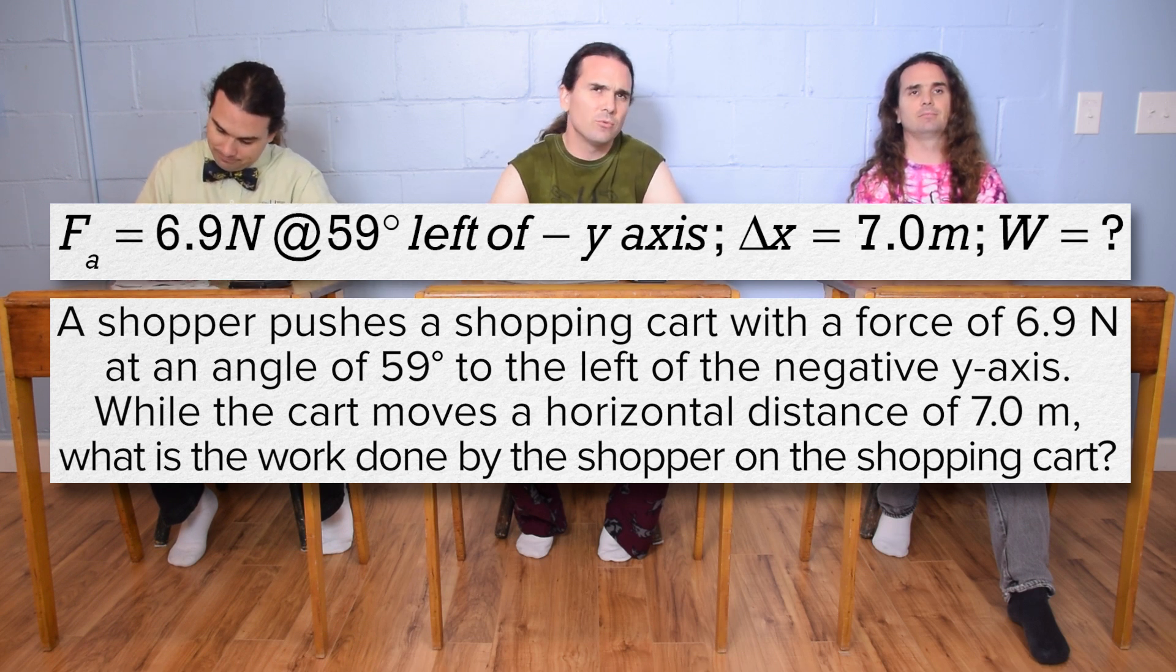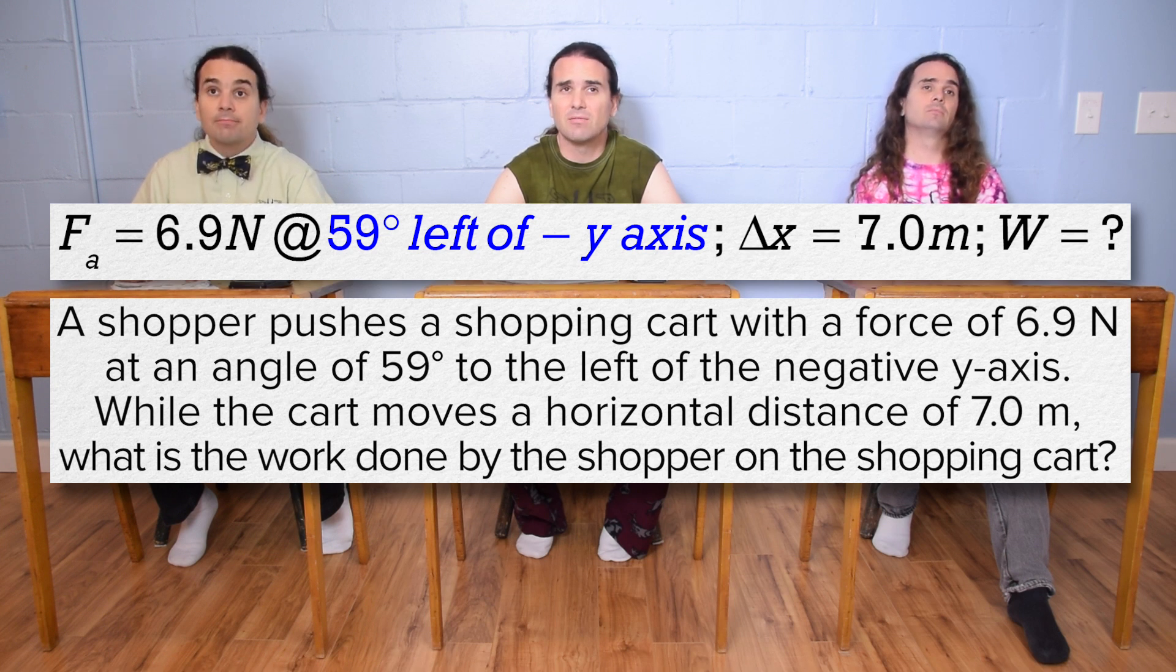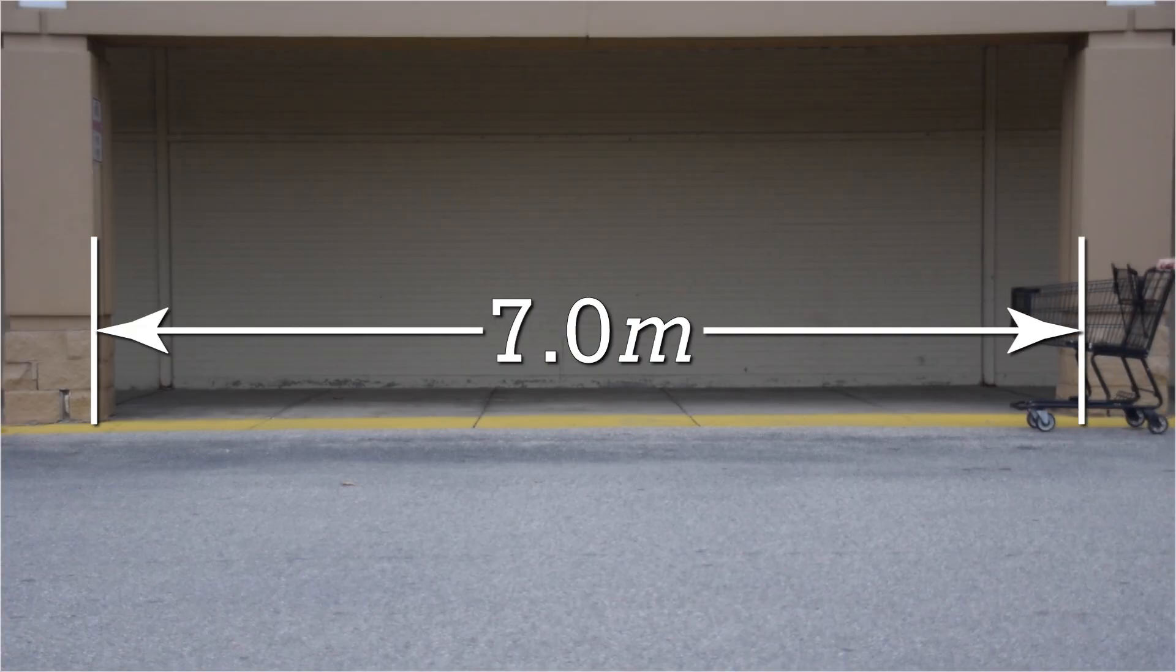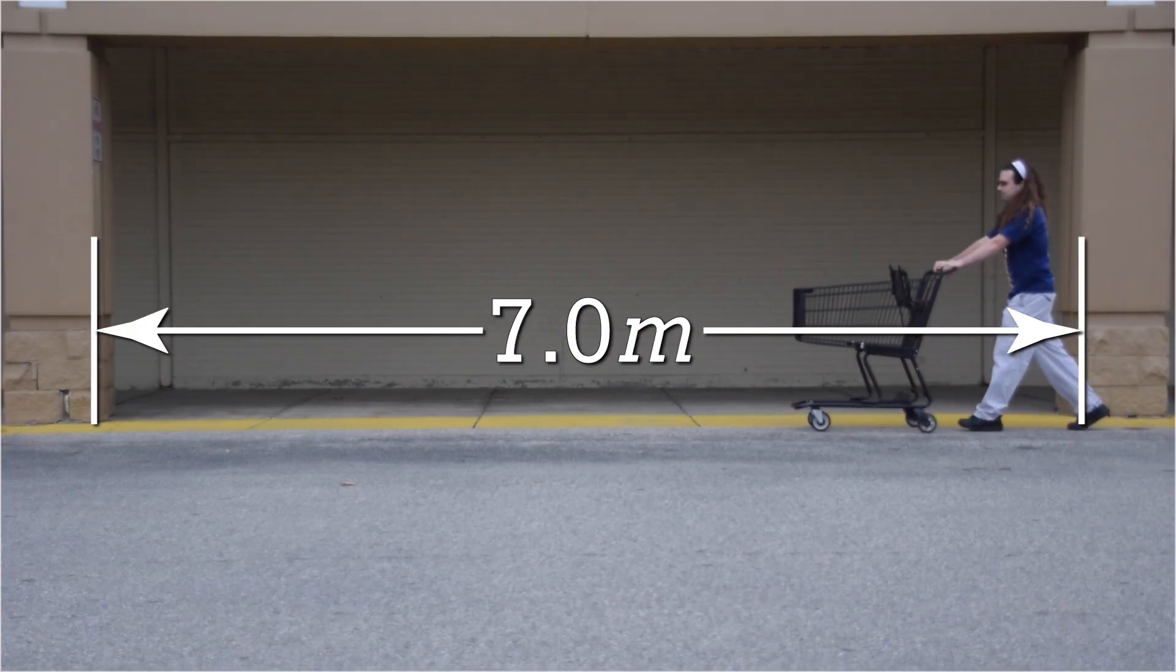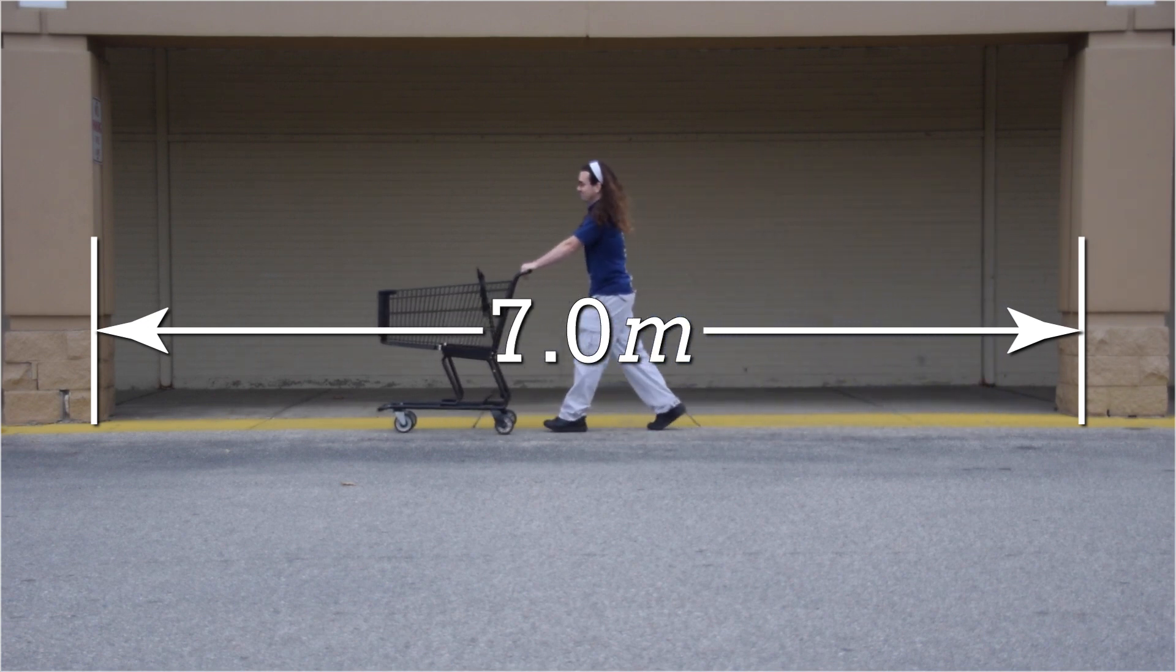Mr. P: I don't really understand the direction, the 59 degrees to the left of the negative y-axis. Could you please explain that? Mr. P: Sure, Bobby. Let's take a look at the example to better understand what is going on here. You can see the 7 meters through which the cart travels.